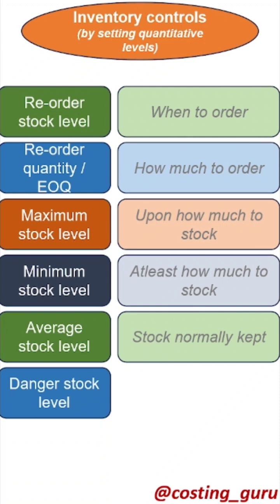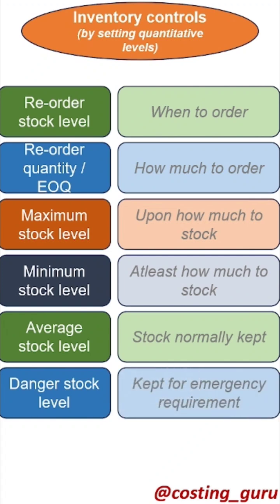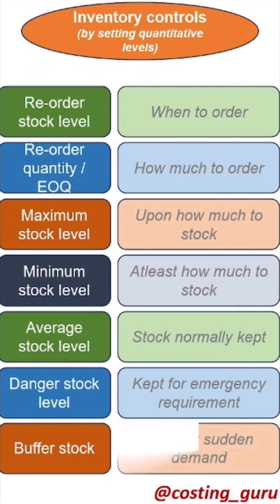Danger level is a level at which normal issuance of material is stopped and emergency issuances are made. Buffer stock is a quantity which can be kept for contingency, to be used at the time of sudden orders.